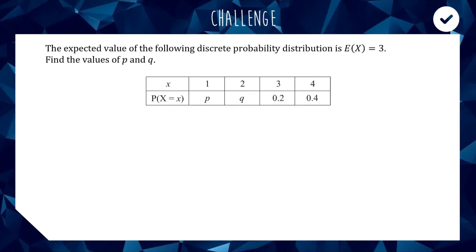Now for the challenge question. We have a discrete probability function where the values of p and q are unknown, but we have the probabilities for 3 and 4. We know the expected value equals 3. Find the values of p and q. If this video is making sense and you like a challenge, hit pause and see if you can make progress. We need to form a pair of simultaneous equations. First, we know p plus q plus 0.2 plus 0.4 must equal 1, so p plus q plus 0.6 equals 1, meaning p plus q equals 0.4. There's our first equation.